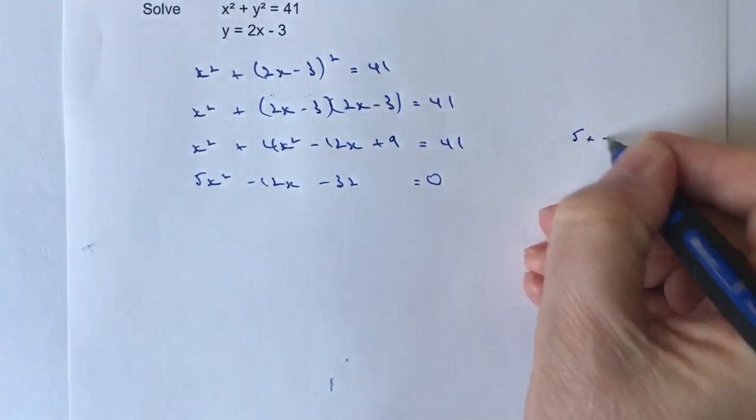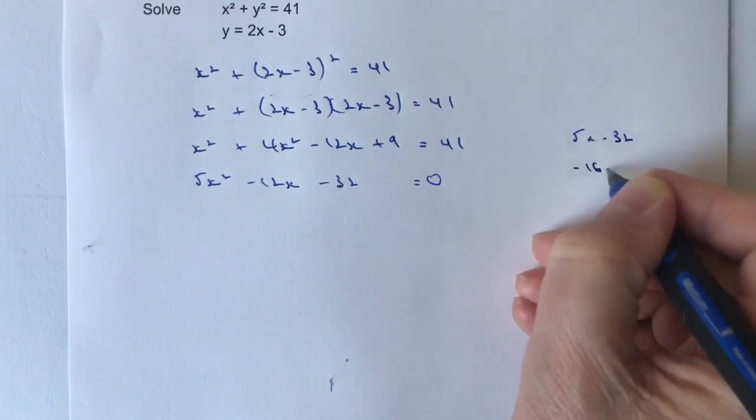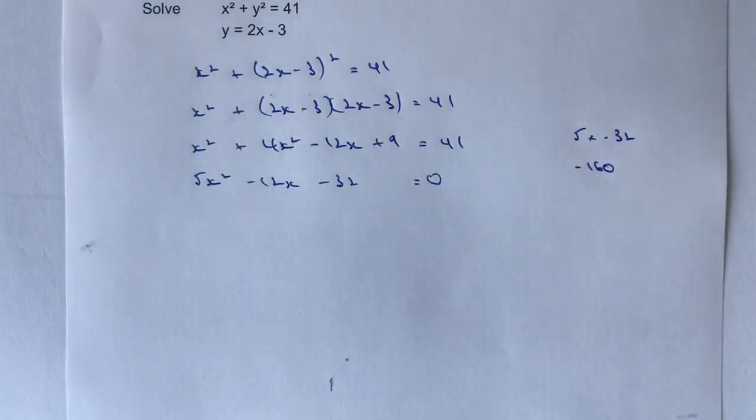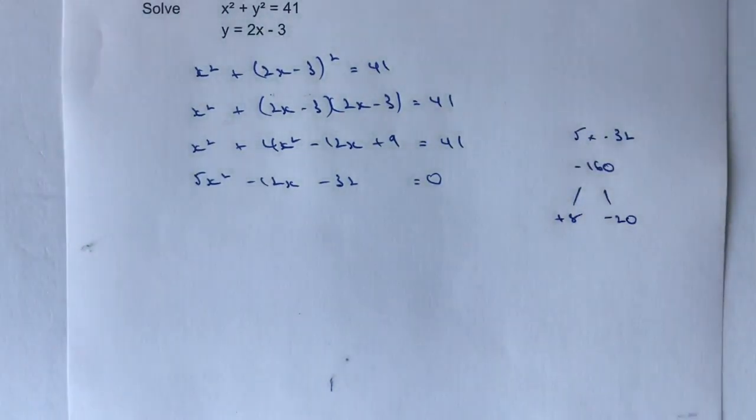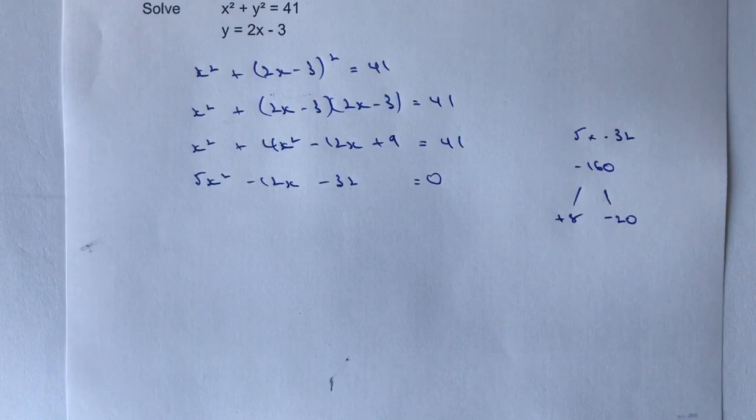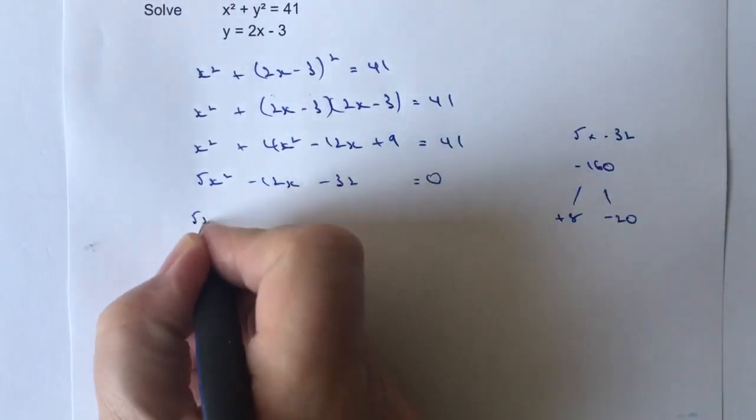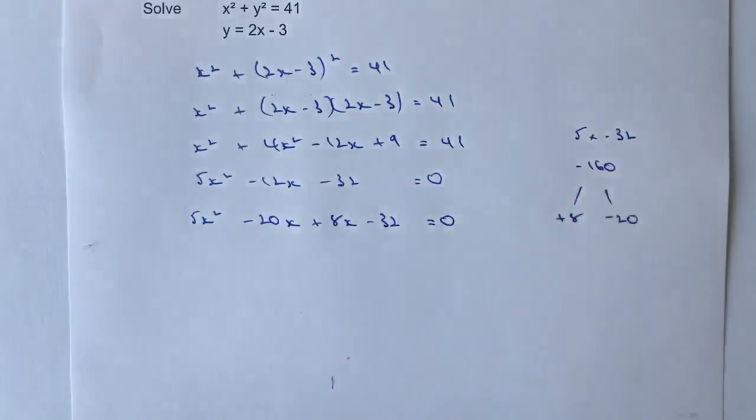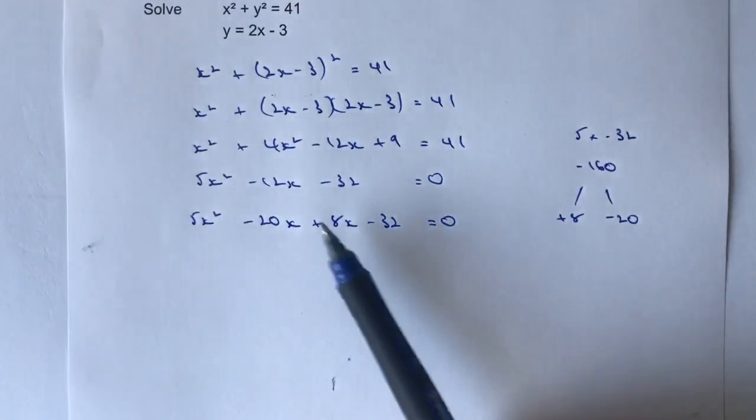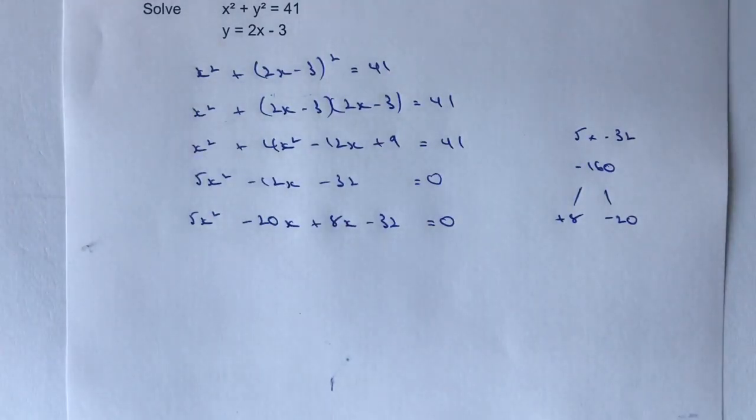And that's going to give me, so 5x minus 32 is going to give me minus 160. And what I'm looking for is two numbers that when I multiply them together make minus 160 and when I add them together make minus 12. Now those two numbers are going to be plus 8 and minus 20. Because 8 times minus 20 is minus 160 and 8 plus minus 20 is going to be minus 12. So it allows me then to actually write this equation as 5x squared minus 20x plus 8x minus 32.